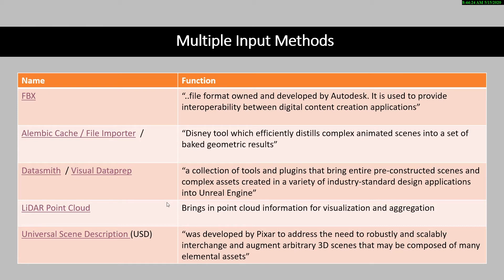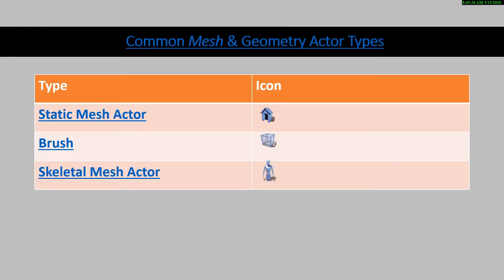As with other slides, links to the additional information and documentation will be provided in the notes section for each of these important input methods. There are three common mesh geometry actor types. This chapter will mainly focus on the static mesh and brush actors. However, there will be a whole chapter dedicated to skeletal mesh actors in the second edX course. The icons pictured are what you can look for when looking in the world outliner inside the engine.